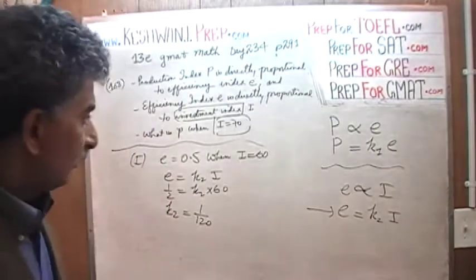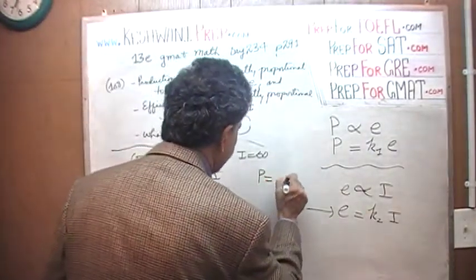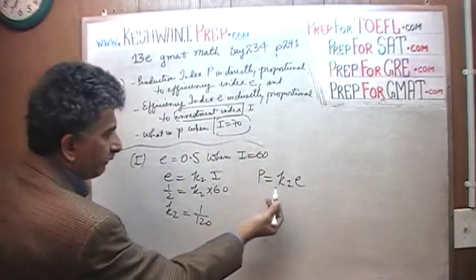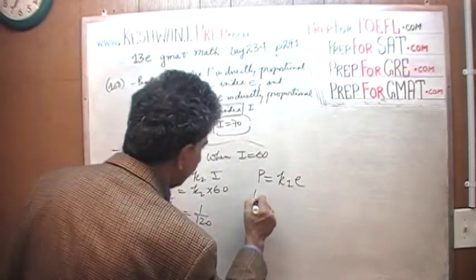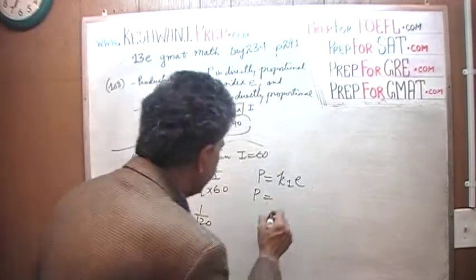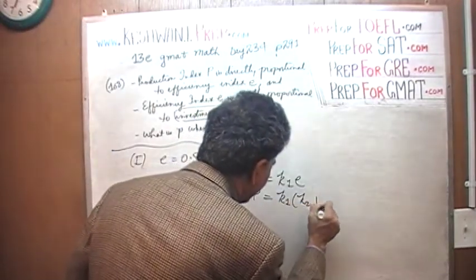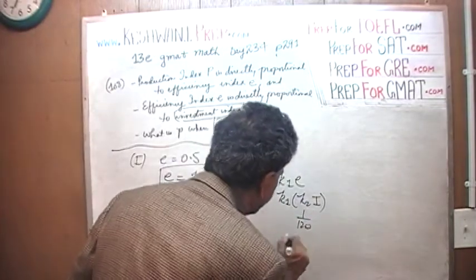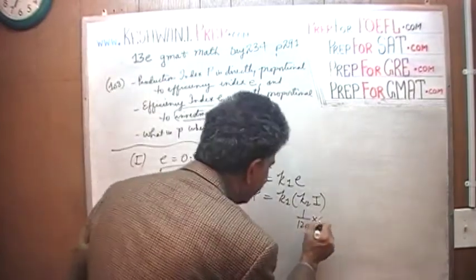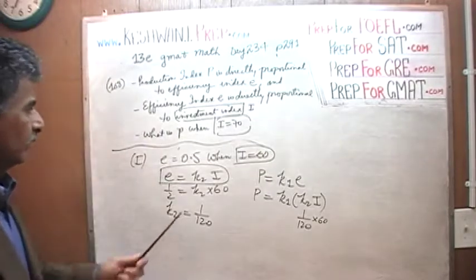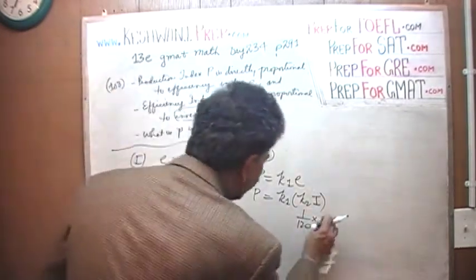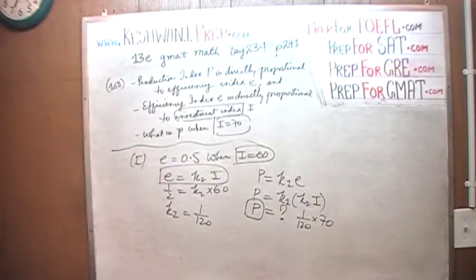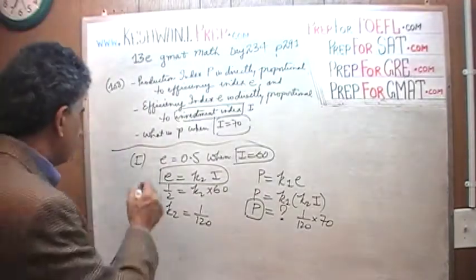Now as we use the first equation, P equals K1 times E. We have the value of E here, E we are told is half. E we know is K2 times I. We know the value of K2, we just found it, it's 1 over 120. They tell you the value of I, or rather they are asking us, in the question they are asking, what's the value of P when I equals 70? So we know the value of I, which is 70, we have to figure out the value of P, but what's the value of K1? There is no way from statement 1 to figure out the value of K1. Statement 1 is simply not sufficient.